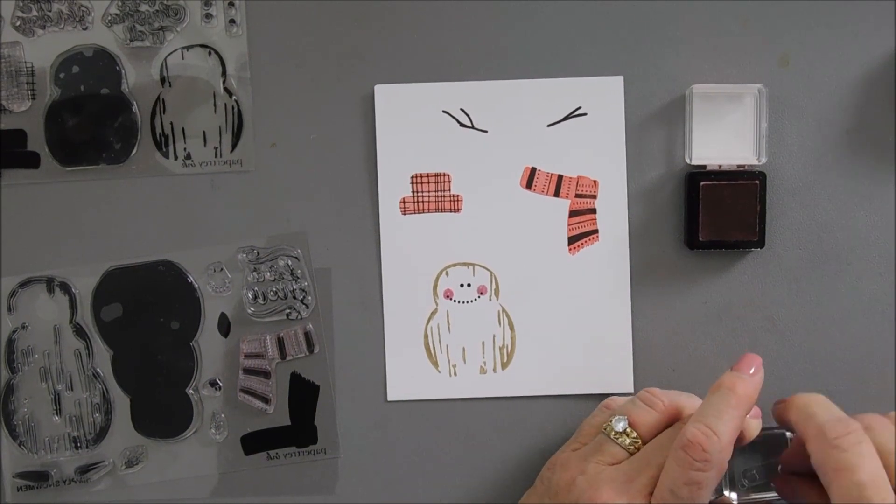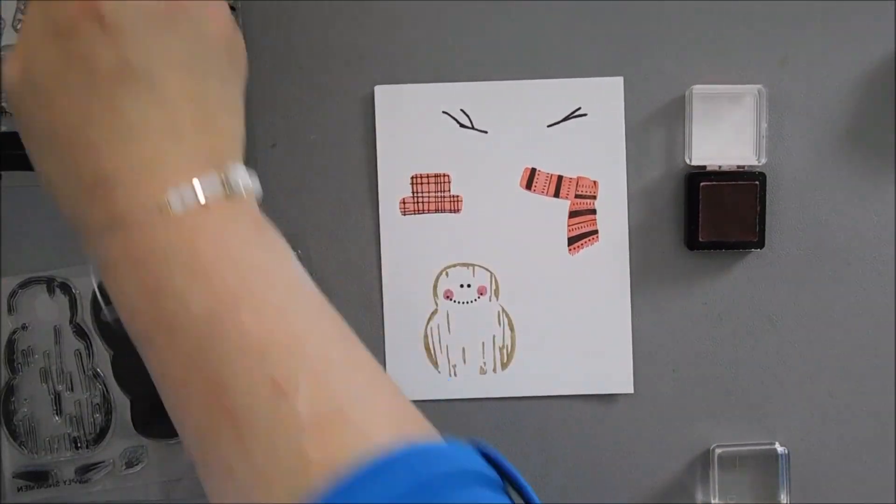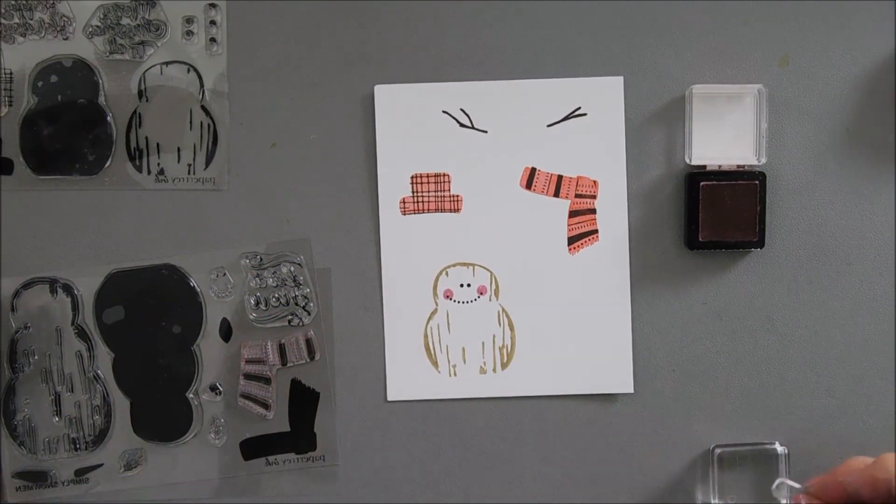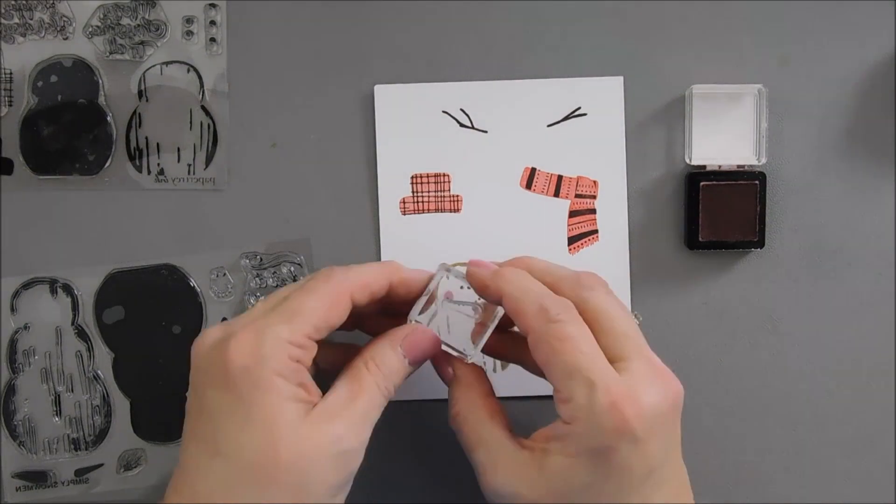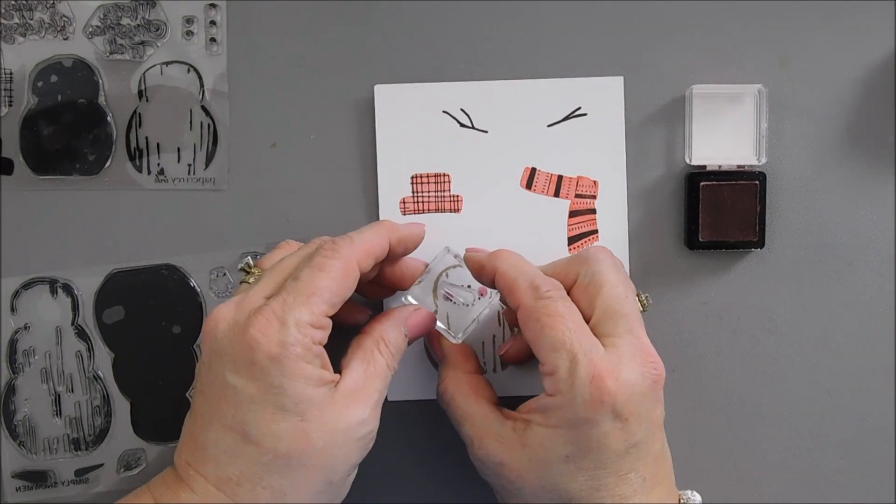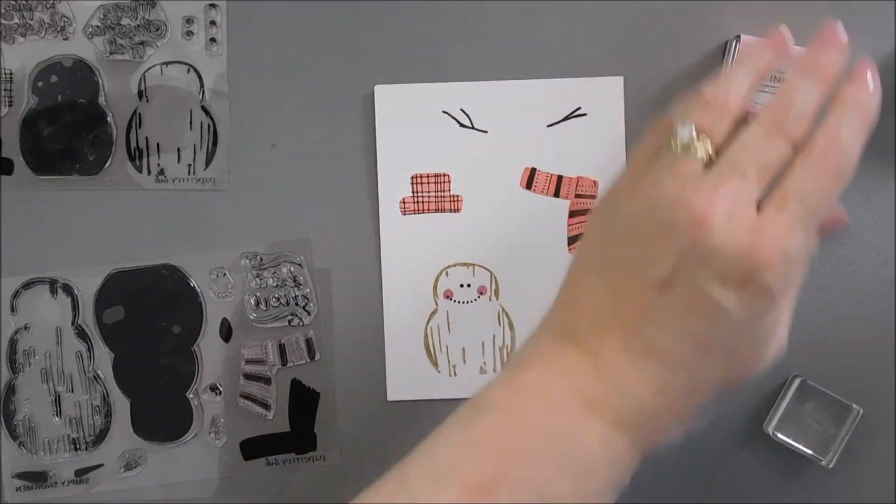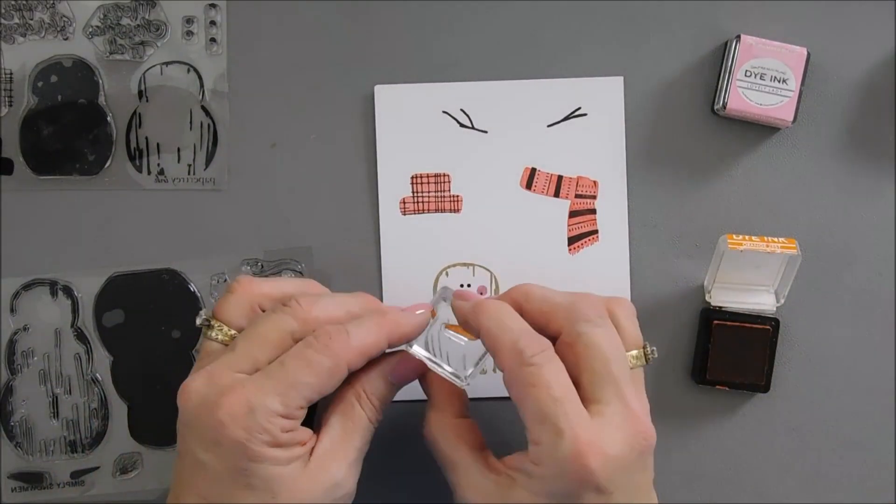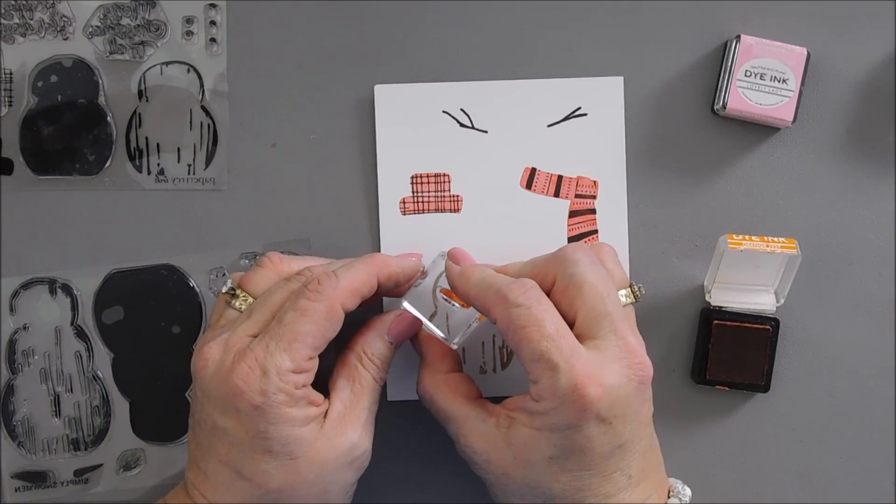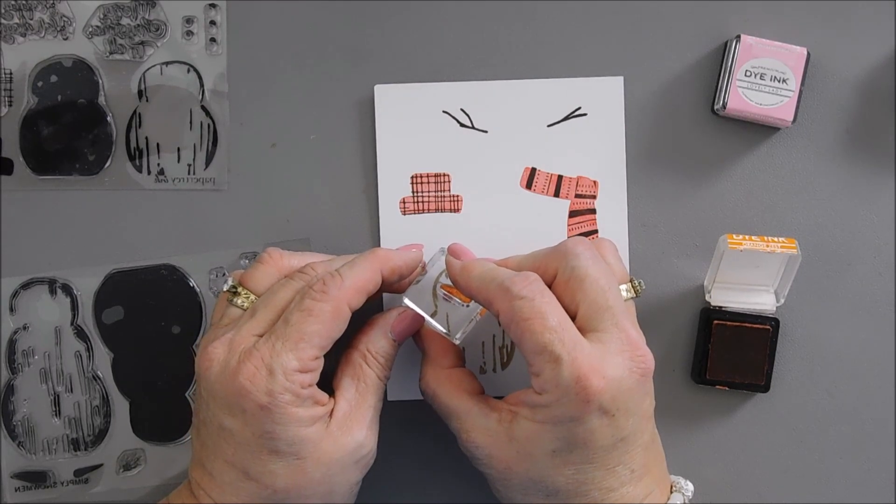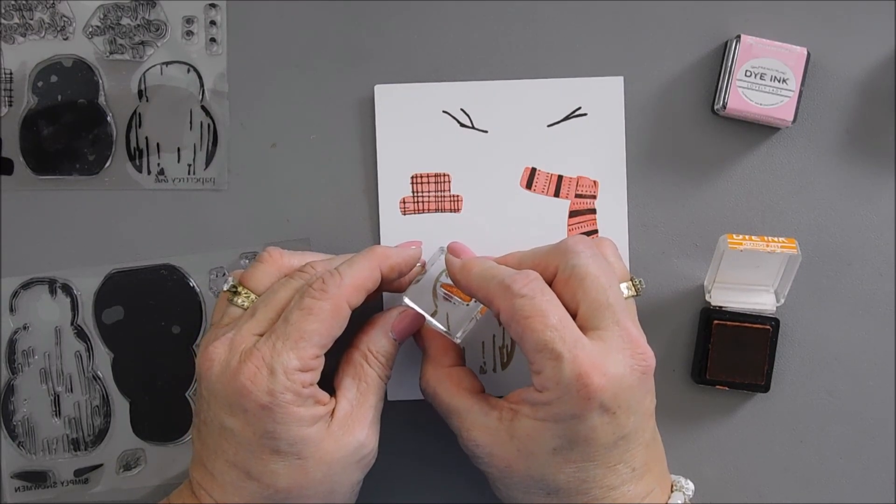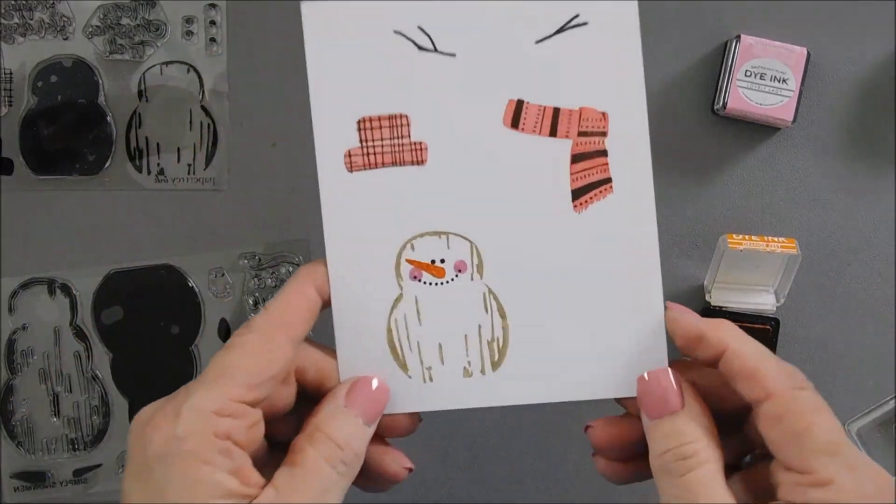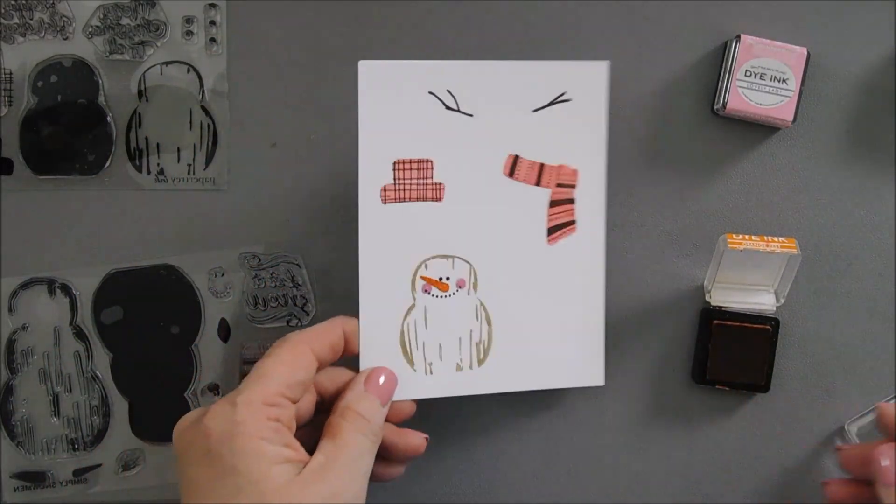And then of course we need a carrot nose. That's where our orange zest comes in. There's two different sizes of carrot noses and I'm going to use the smallest one. We're going to stamp this so our nose is facing the left. So cute.